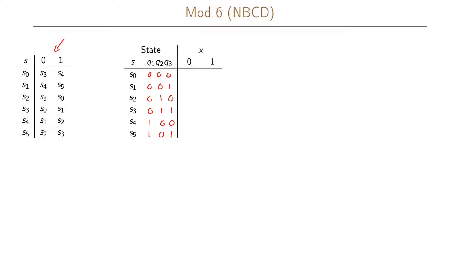Looking at the state transition table we can fill out the table using our state assignment. If we are in s0 and get a 0 we go to state 011, and with a 1 we go to state 100. If we are in s1 we go to 100 and 101. From s2 we go to 101 and 000. In s3 we go to 000 and 001. If we are in s4 we go to 001 and 010. And if we are in s5 we go to 010 and 011.